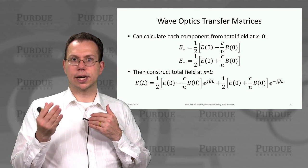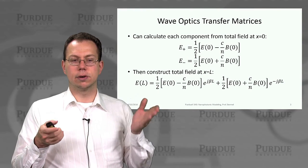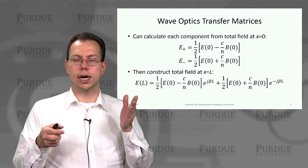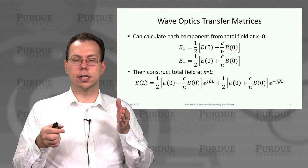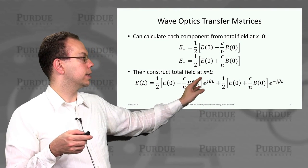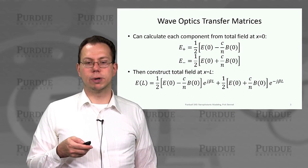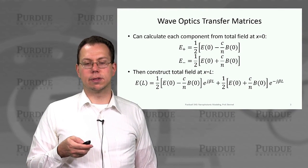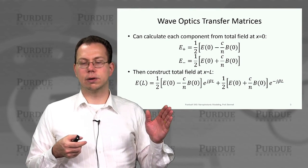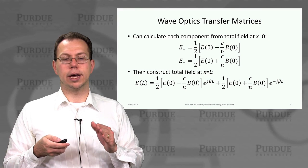And so then that allows you to write down the total field as a function of e plus and e minus, which is like the u0 and d0 in the initial layer. And so we can write that kind of like this. So you can see that's very similar to the form we had earlier but just expanded in terms of e fields at the initial point, giving you the field at that final point l.